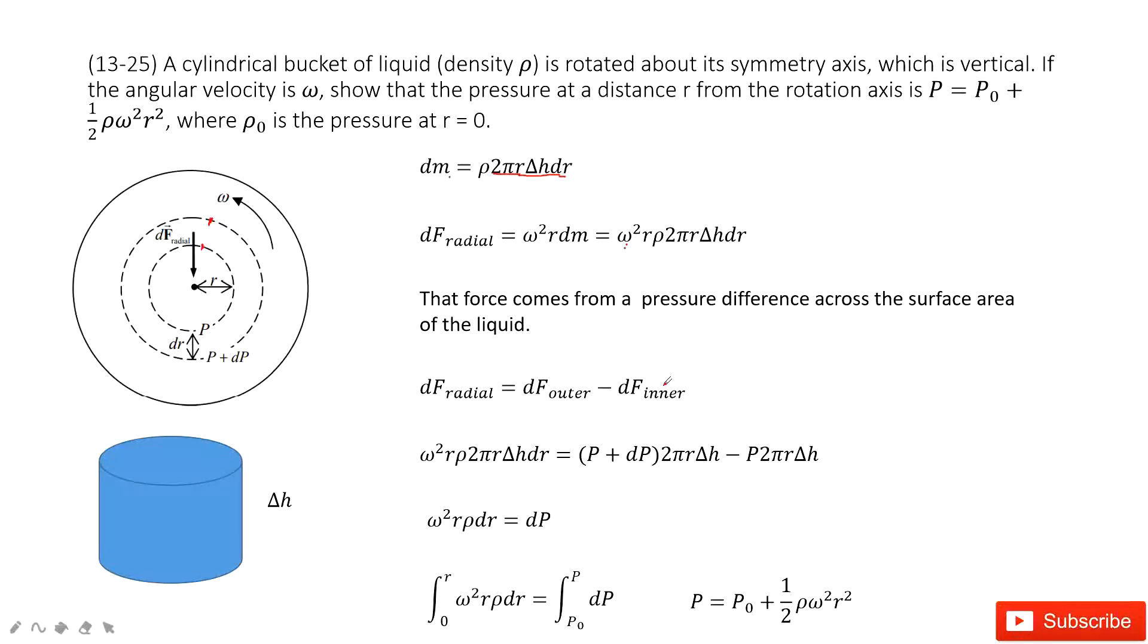Now the next step, what we need to do is find that this centripetal force also equals the outer force minus the inner force. So the outer force, we can use P plus dP times the area. And also this one, the inner force is P times 2πr times the area, 2πr delta h, P times 2πr delta h.